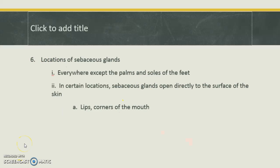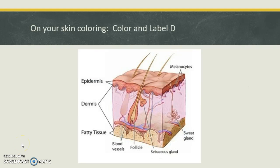Sebaceous glands can be found pretty much anywhere on our body except for our palms and the soles of our feet. Some attach directly to a hair follicle, but sometimes they open directly to the surface of the skin. A couple of locations where they attach directly to the surface are the lips and the corners of the mouth. On your integument coloring sheet, find the sebaceous glands — they look like a cauliflower — labeled D. Color and label those, pausing the video while you do so.